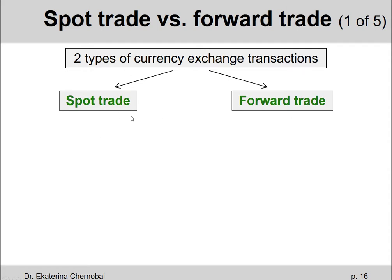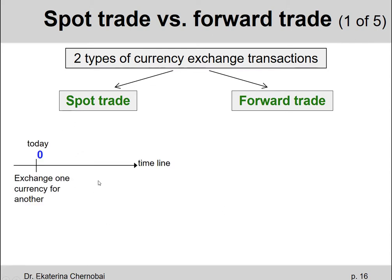We can exchange currencies one into another using the exchange rate as part of two different types of trades. There are two types of currency exchange transactions: the spot trade and the forward trade. Spot trade is exactly what we have been talking about until now — everything happens on the spot, that's where the name comes from. You walk into a bank, the bank immediately gives you some amount of euros in exchange for your dollars. So today, at year zero on our imaginary timeline, is when the exchange of one currency for another takes place.